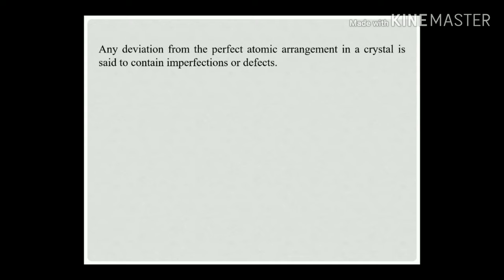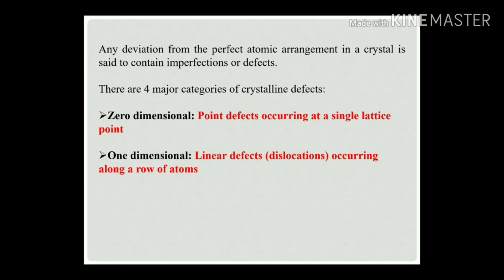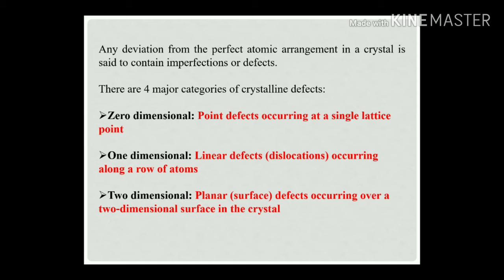There are four major categories of crystalline defects. First, zero-dimensional defects, or point defects, occurring at a single lattice point. Second, one-dimensional or linear defects, also called dislocations, occurring along a row of atoms. Third, two-dimensional or planar defects, also called surface defects, occurring over a two-dimensional surface in the crystal. Fourth, three-dimensional defects, or volume defects — bulk and void defects.